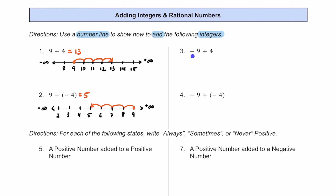For number 3, we have negative 9 plus 4. Notice how we're using the same types of numbers, just their opposites. Let's make a number line. We're starting with a negative 9, so we're going to be in the negatives. We're adding a positive number, so we'll be moving to the right. Based on that, I'm going to put negative 9 to the left.